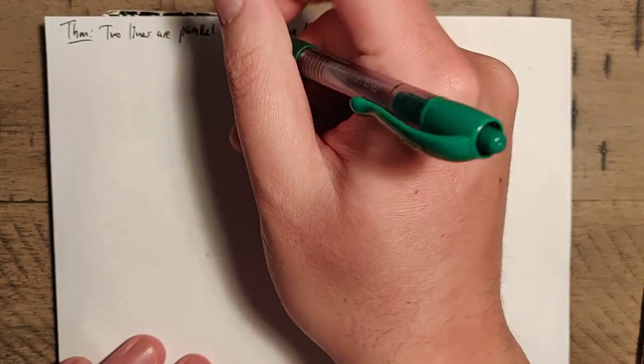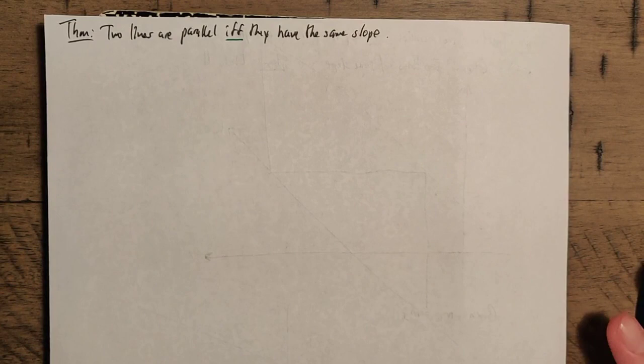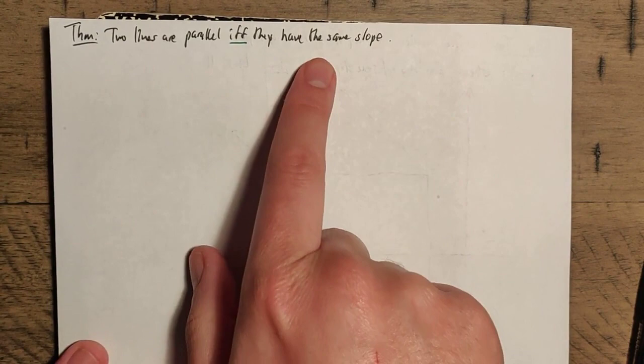Our theorem here is that two lines are parallel if and only if they have the same slope. Note the 'if and only if' part — this is a biconditional statement. Just because something is biconditional doesn't necessarily mean it's a definition. So this turns out to be two theorems in one. There are actually two directions to worry about: if two lines are parallel, then they must have the same slope; and the converse — if two lines have the same slope, they must be parallel.